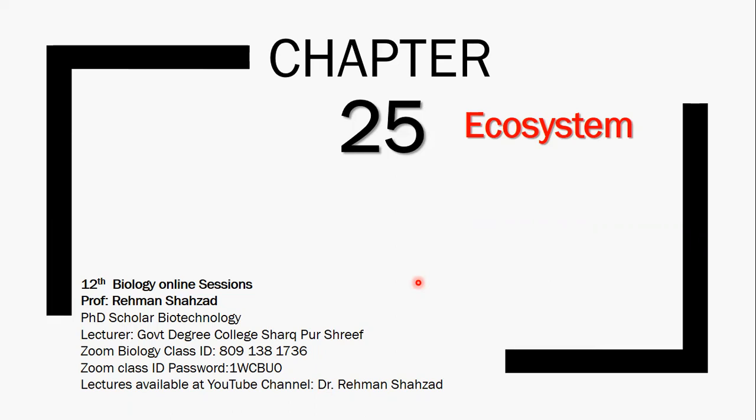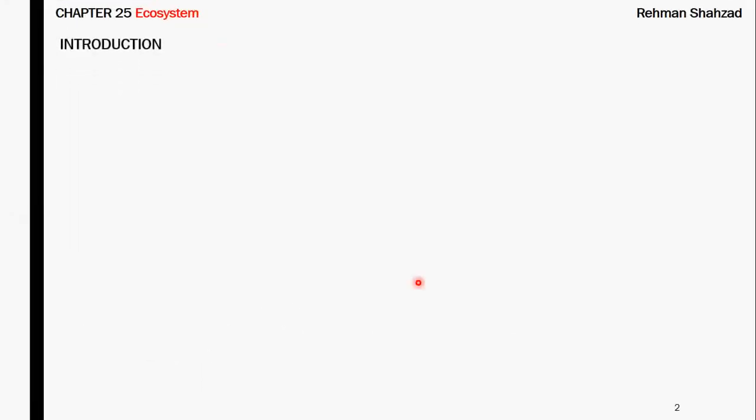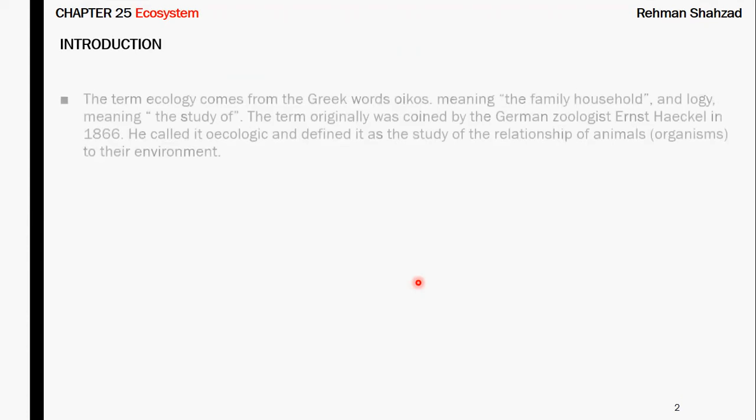Let's start here — Chapter number 25, Ecosystem. In this lecture, we will briefly see the introduction of this topic, including how this word was derived.